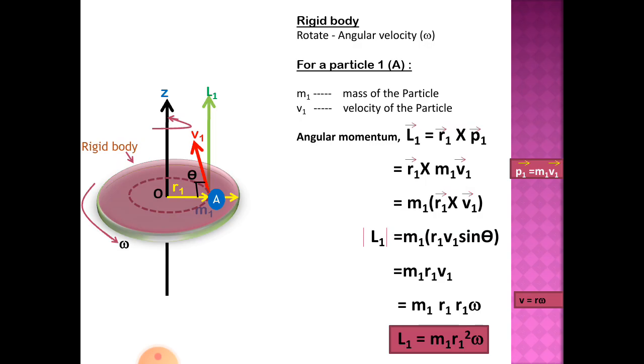Consider a rigid body which is rotating about an axis passing through the body O and having angular velocity omega.